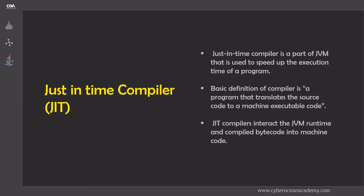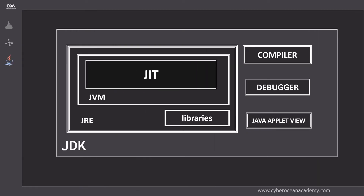What is a just-in-time compiler? A just-in-time compiler is a part of the JVM — our Java Virtual Machine — that is used to speed up the execution time of a Java program. A compiler is a program that translates the source code into machine-executable code, and the just-in-time compiler interacts with the JVM at runtime and compiles the bytecode into machine code.